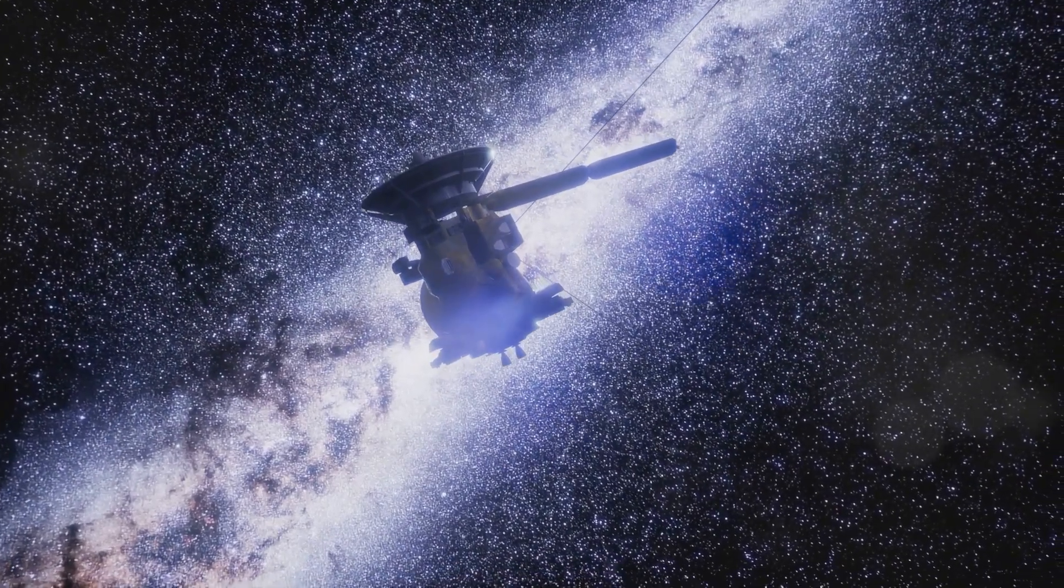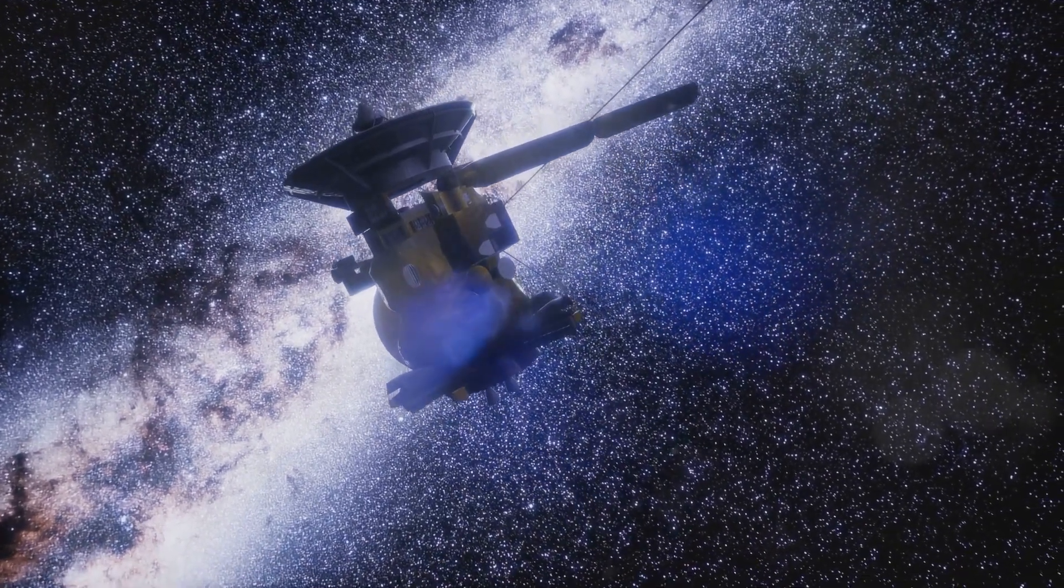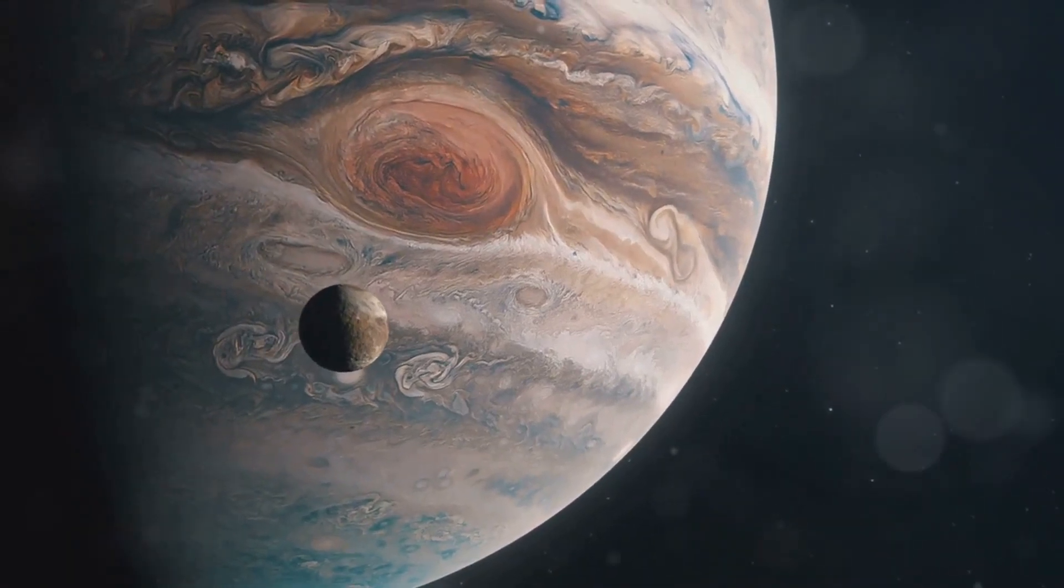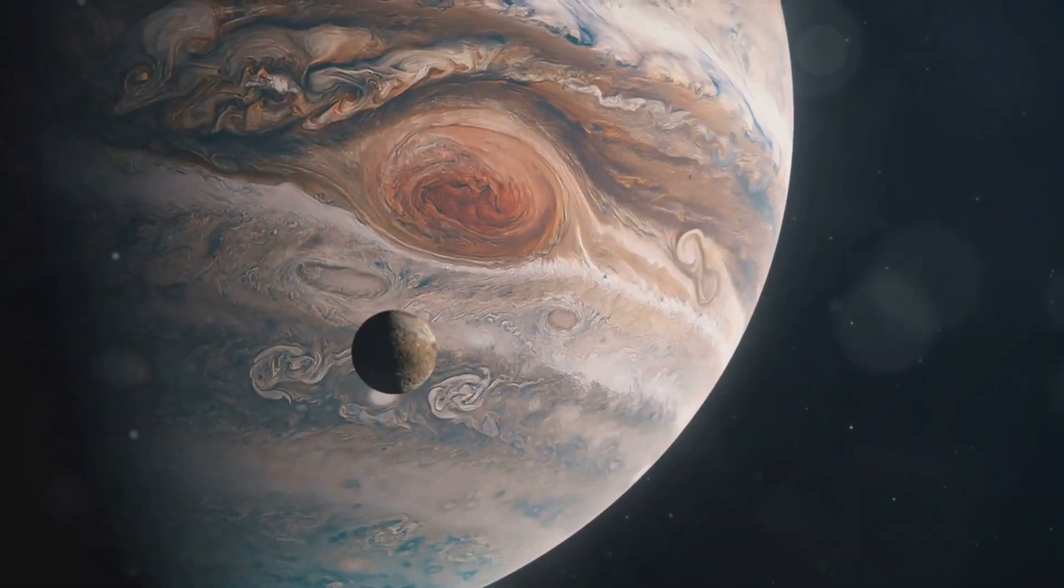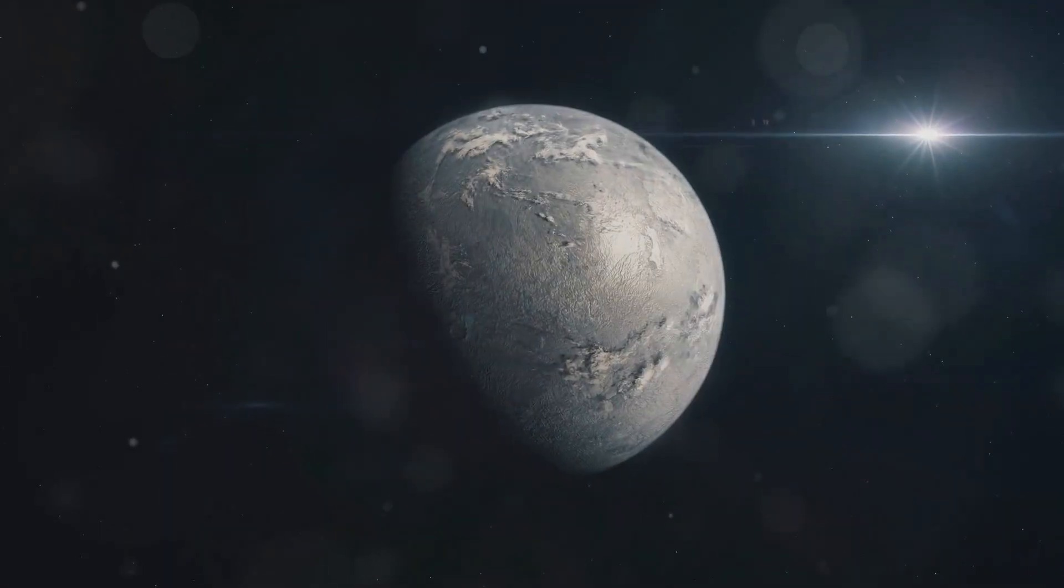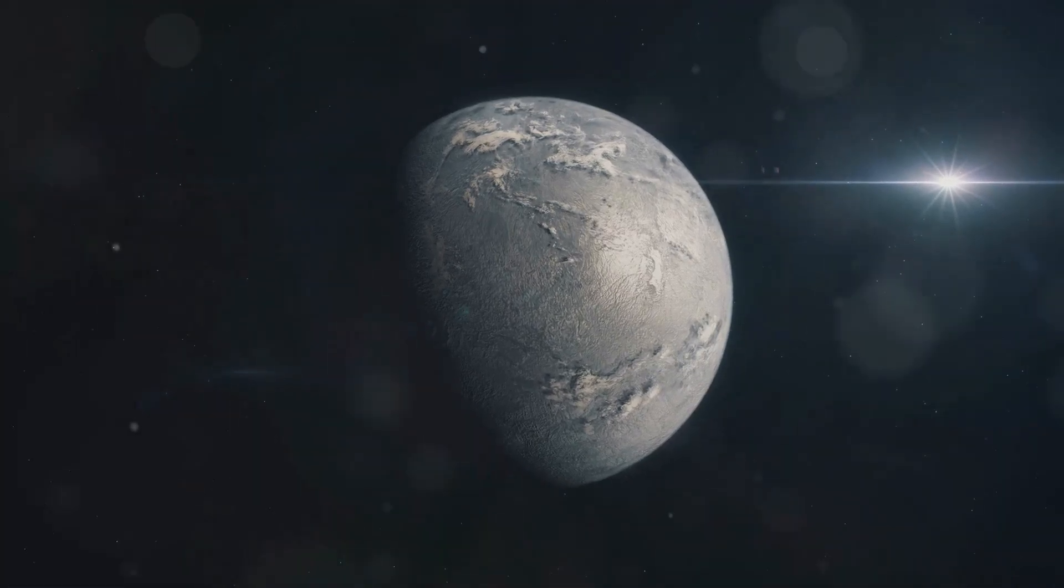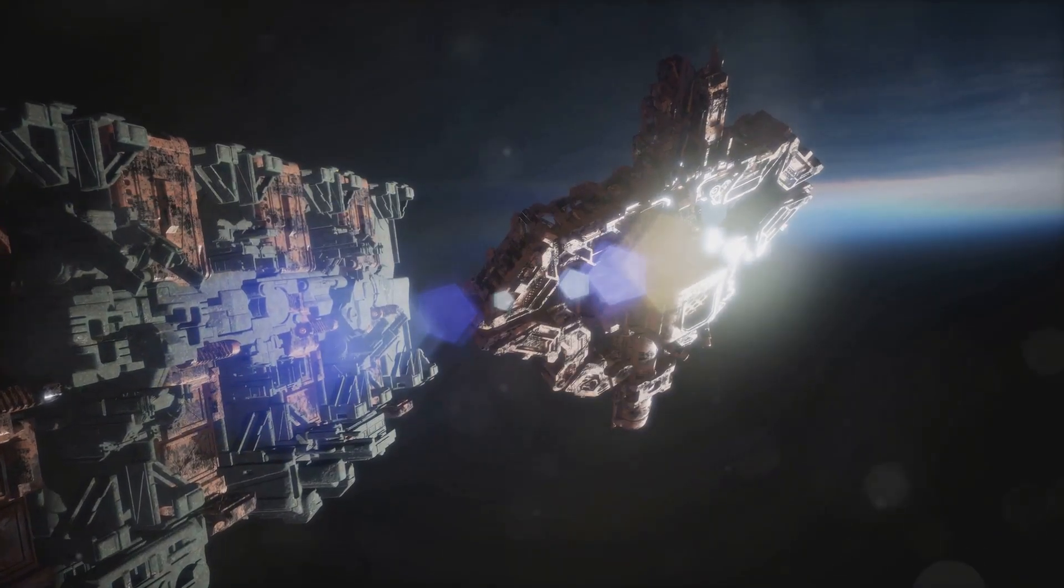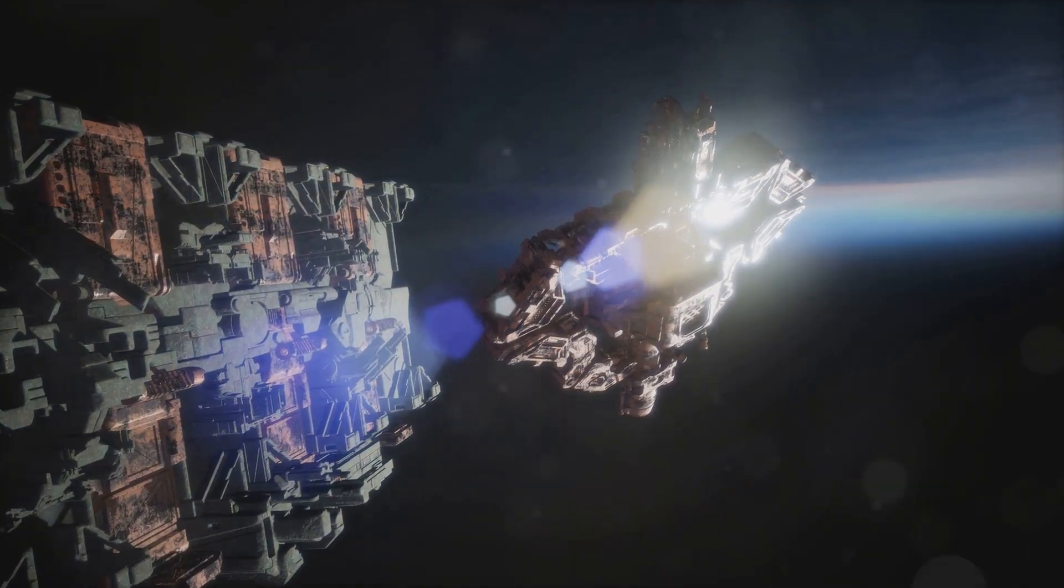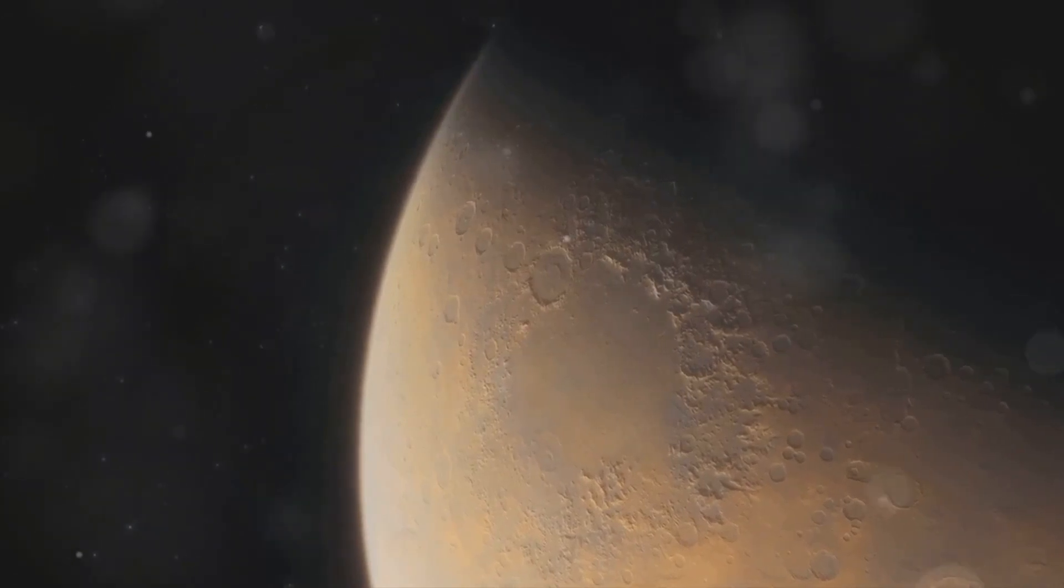While we have yet to see a rogue planet directly, we can speculate about their appearance based on what we know about planets in our own solar system. Some might be giant gas planets shrouded in thick atmospheres of hydrogen and helium, much like Jupiter or Saturn. Others could be smaller rocky worlds, perhaps even containing water ice or frozen oceans on their surfaces. Despite the challenges in observing them, rogue planets hold immense potential for scientific discovery. They could provide valuable clues about the early universe and the conditions under which planets form.